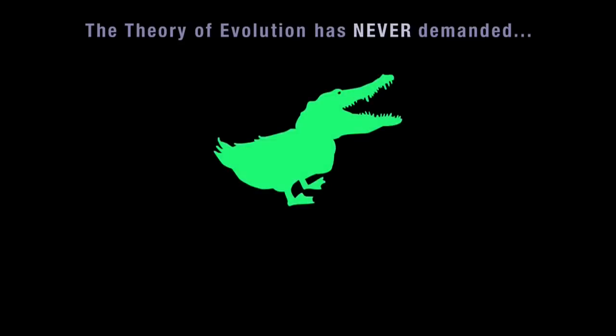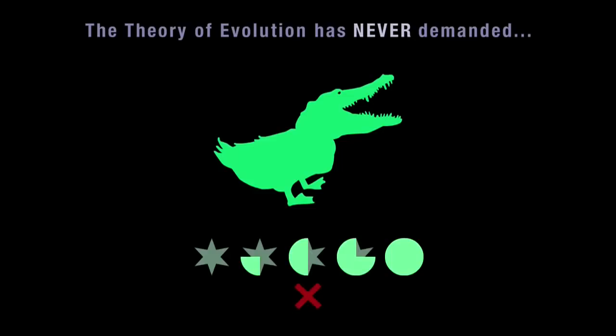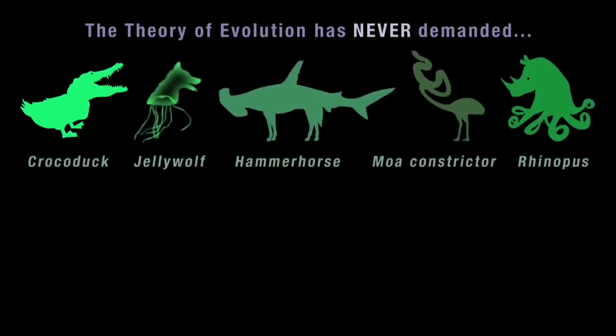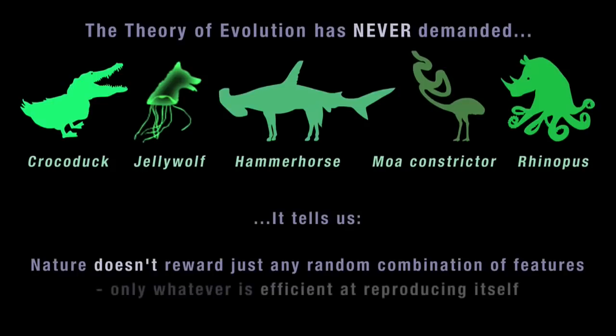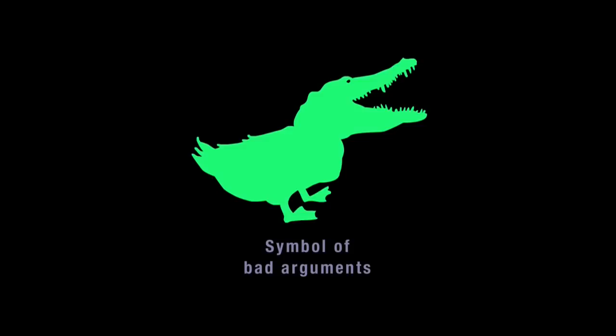The theory of evolution has never demanded the existence of animals with a crocodile's head and a duck's body. Even when there's evidence that one animal evolved directly from another, that doesn't mean transitional forms must look like whole chunks of each animal stuck together. Evolution doesn't work by combining different species at random, and evolutionary scientists have never hunted for the Crocoduck, the Jellywolf, or the Rhinopus. Nature doesn't reward just any random combination of features — it rewards only whatever is efficient at reproducing itself. The Crocoduck, invented to ridicule evolution, has instead become the symbol of bad arguments against evolution.